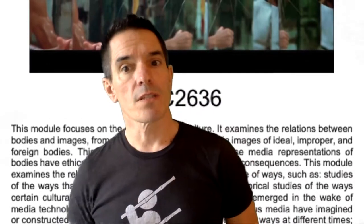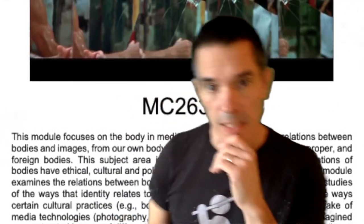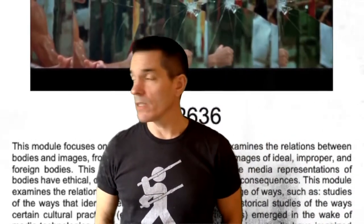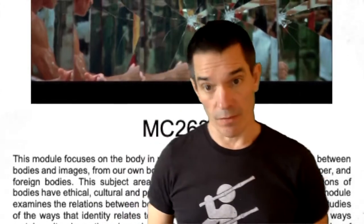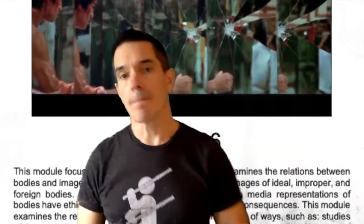The module examines the relations between body and image in a range of ways, such as studies of the way that identity relates to body and image, or body image; historical studies of the ways certain cultural practices — for example, things like body building, dancing, exercise, martial arts — emerged in the wake of media technologies like photography or film. It also covers the ways that various media have imagined or constructed images of different kinds of bodies at different times, and the impacts and roles of media images on body images with lived bodily practices.